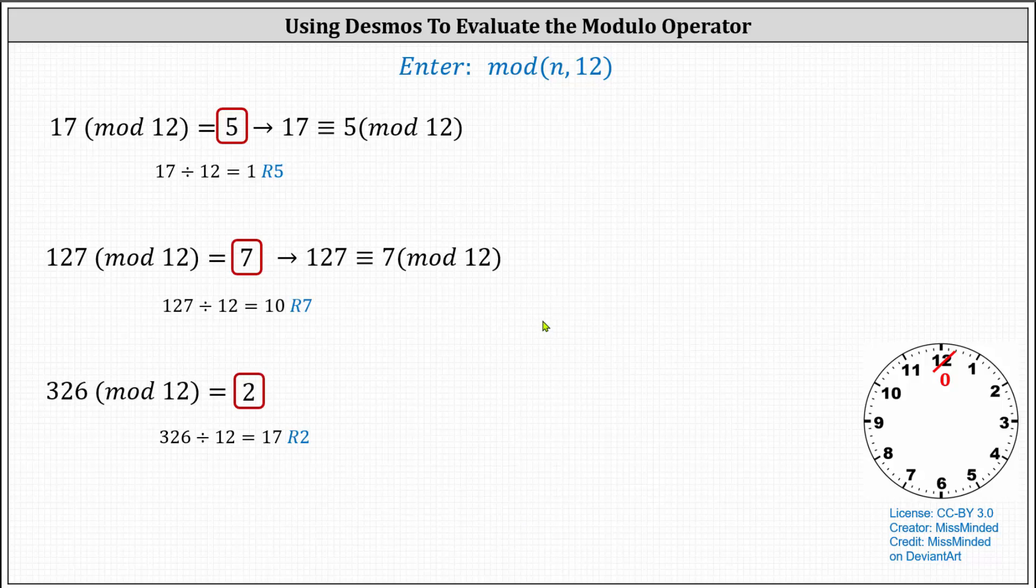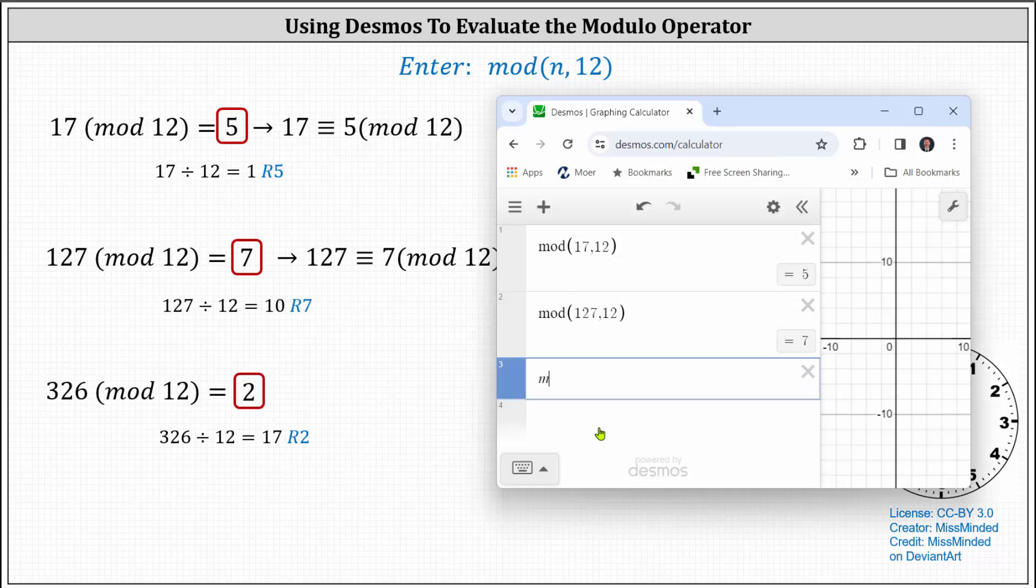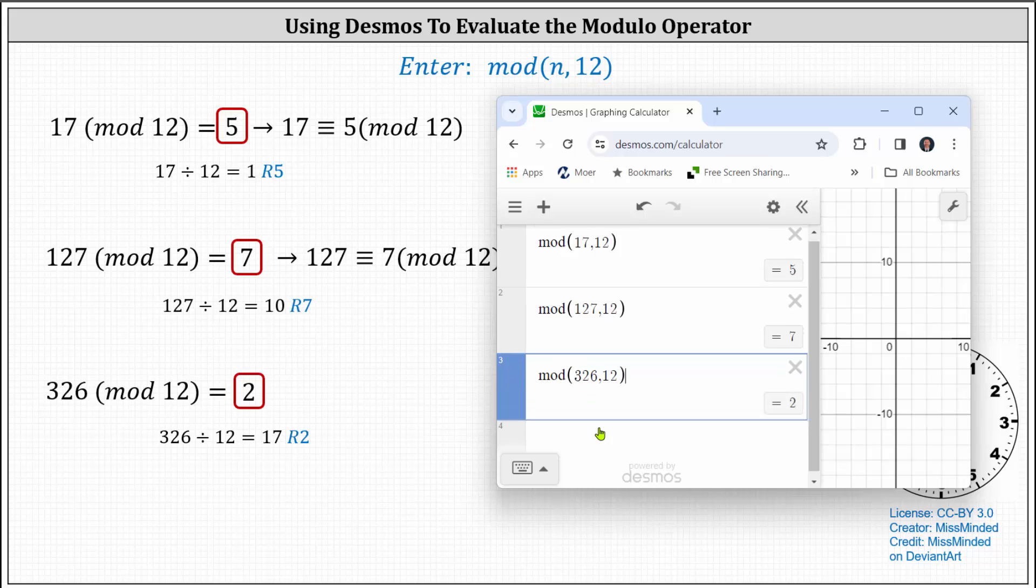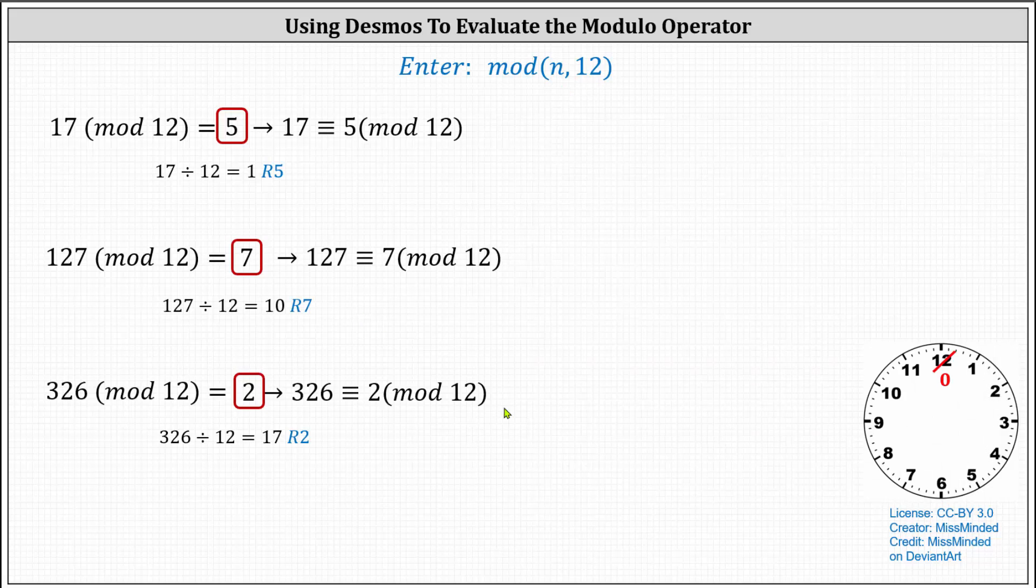And again, verifying this using Desmos, we enter mod and then in parentheses, 326 comma 12. And finally, once again, we can also state 326 is congruent to two mod 12. I hope you found this helpful.